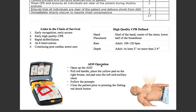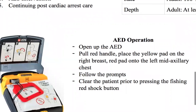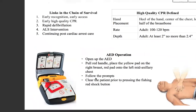These are the training AEDs we use. Basically, all you have to do is open up the AED, pull the red handle, and place the yellow pad on the right breast — as you can see in the pictures right here. Place the red pad onto the left mid-axillary chest, as you can see here. Just follow it exactly as you see in the picture. Once the pads are applied, the machine will instruct you to clear the patient, then analyze the rhythm — you don't have to press a button to analyze. It'll give you a shock advised or no shock advised. It'll charge up, show a flashing red button, and you'll make sure everybody's clear again before pressing the shock button.